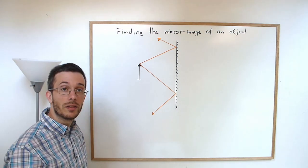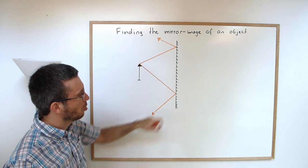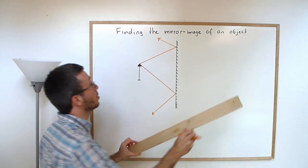I'm going to find the image of the object. All I need to do is to backtrace those two rays and see where they intersect.